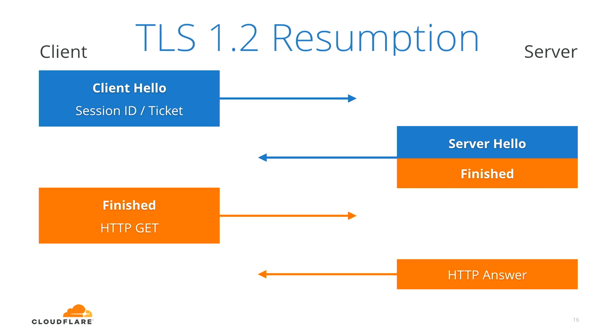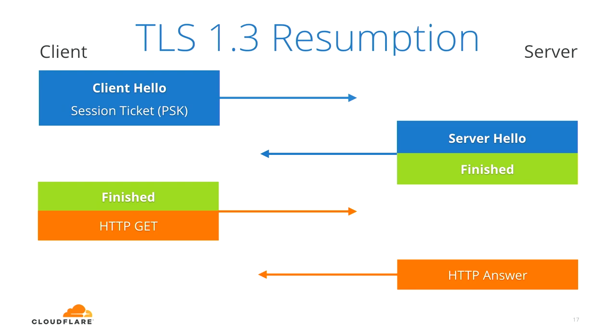The server now has shared keys, sends a finished message, and the client sends its own finished message and the request. This is TLS 1.2, what is already happening every day with most modern TLS connections. TLS 1.3 resumption is not that different — it still has the concept of a session ticket. The name of what's inside changed to PSK, which means pre-shared key, because that's what it is: key material agreed upon in advance.